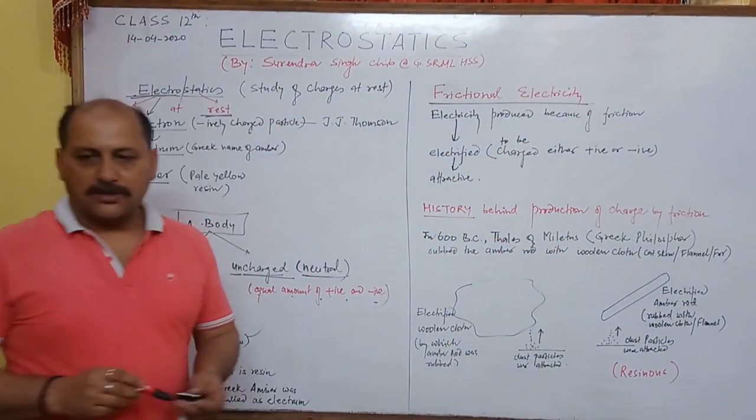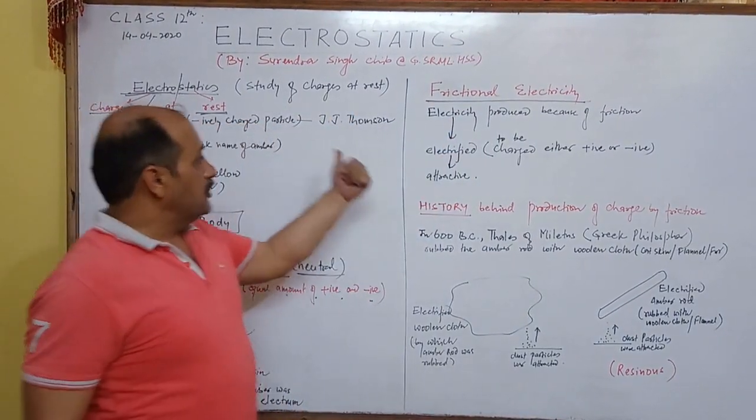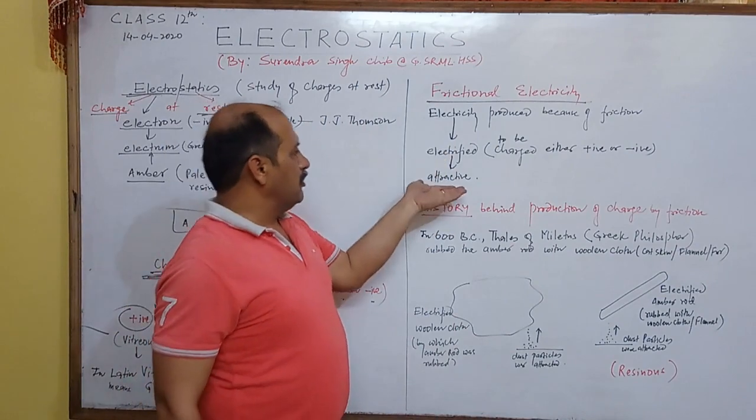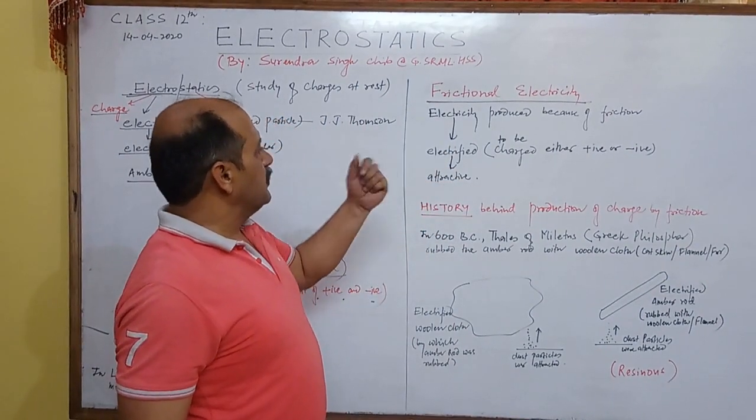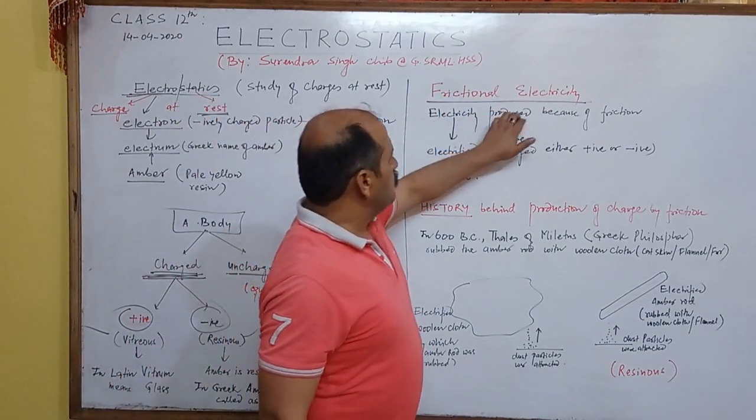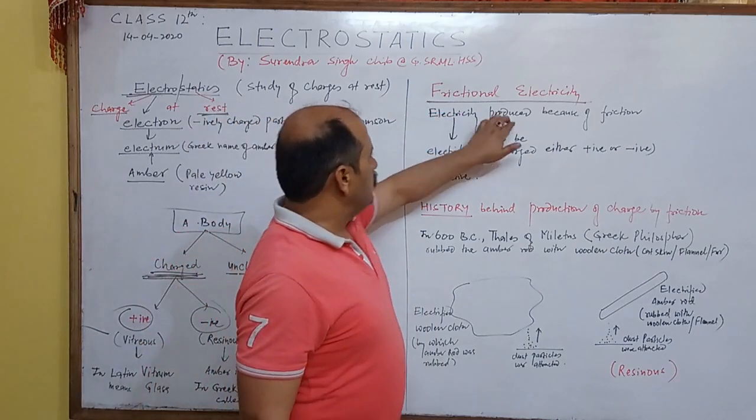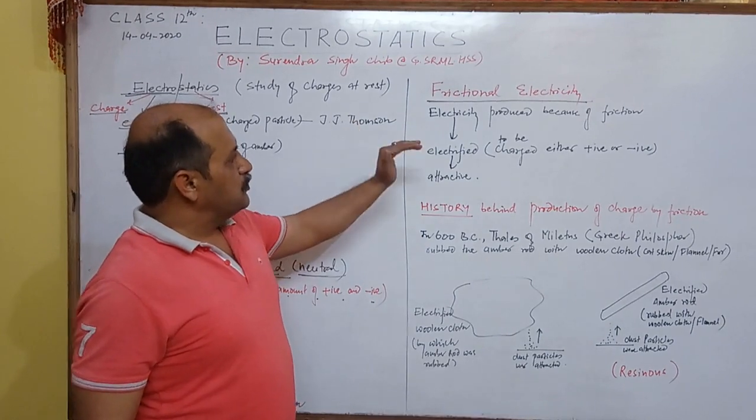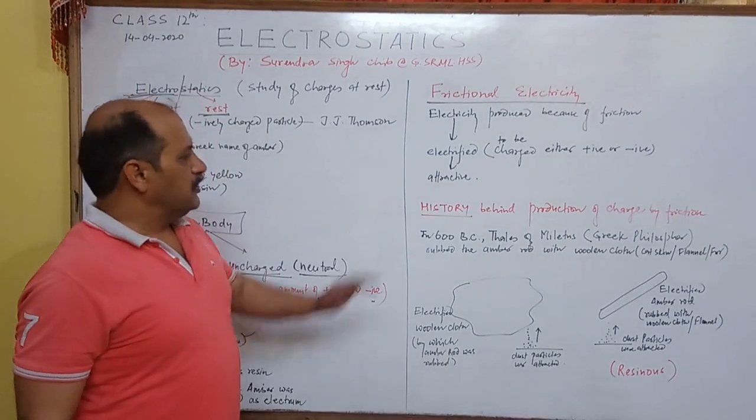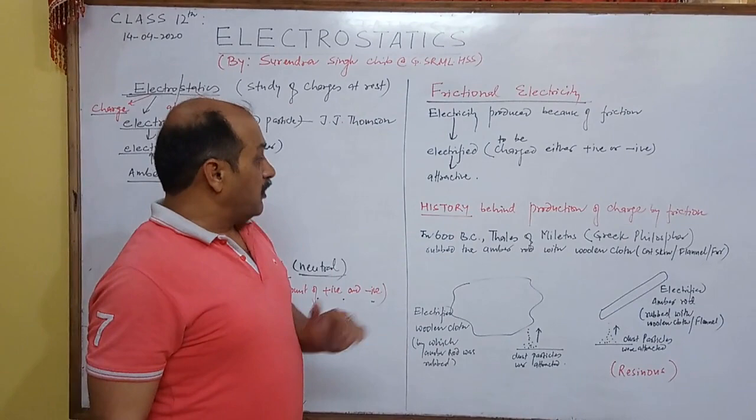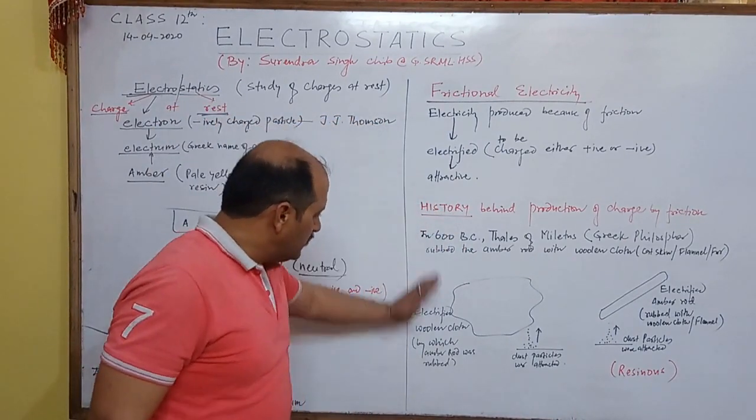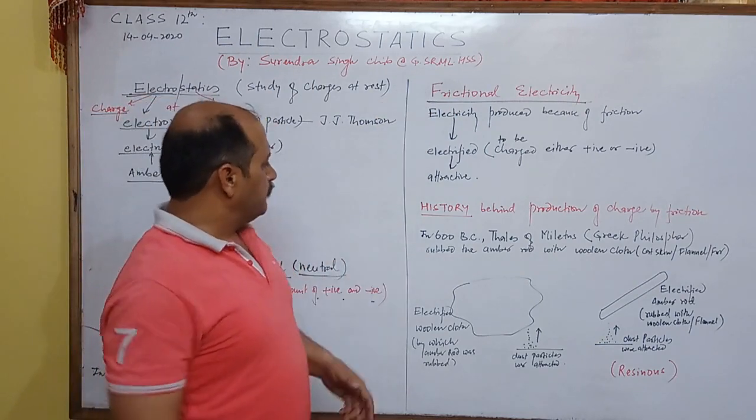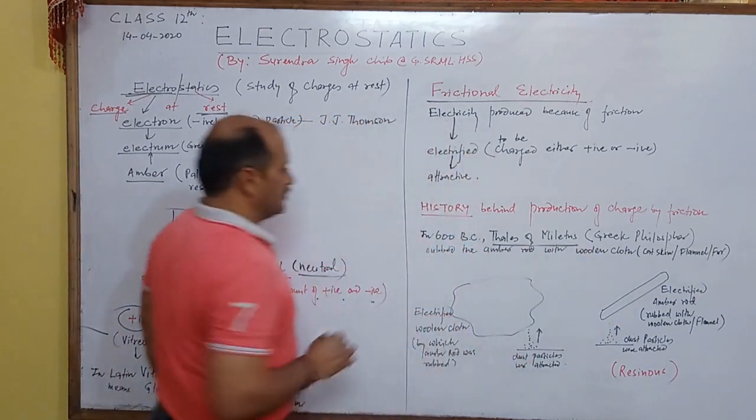Frictional electricity. Now what is frictional electricity? What is said to be electrified if it get charged? Either positive or negative. Or you can say it attains the property of attracting small bits of paper or dust particles. Frictional electricity means electricity produced because of friction. Or you can say, charge produced because of friction. Charge can be produced in many ways. But first of all, let me explain how the charge is produced because of friction. That is called frictional electricity. Now there is some history behind production of charges by friction.